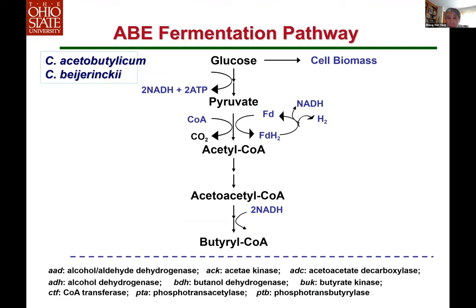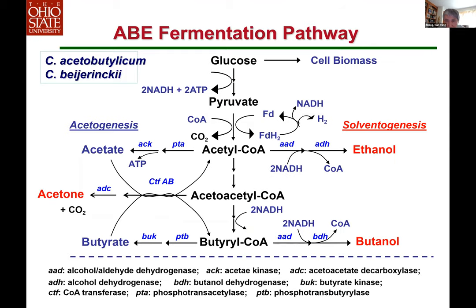To produce butanol, historically some Clostridium — like Clostridium acetobutylicum and Clostridium beijerinckii — can convert glucose to acetate, butyrate, acetone, ethanol, and butanol. This is a relatively complex metabolism involving two phases: acidogenesis and solventogenesis to produce the solvents acetone, butanol, and ethanol — that's why it's called ABE fermentation. Our focus is to get butanol. We have been working on metabolic engineering, trying to engineer the pathway to direct the carbon from glucose into the targeted product, butanol.